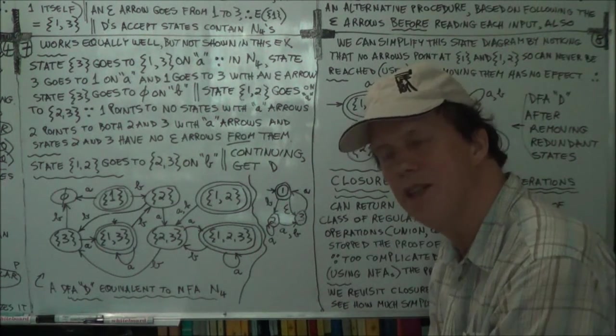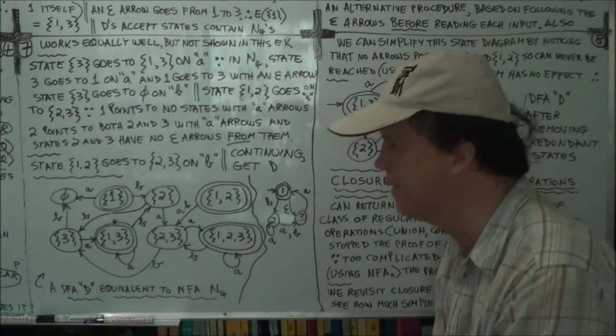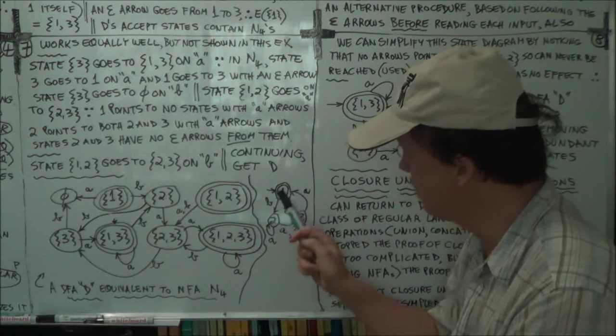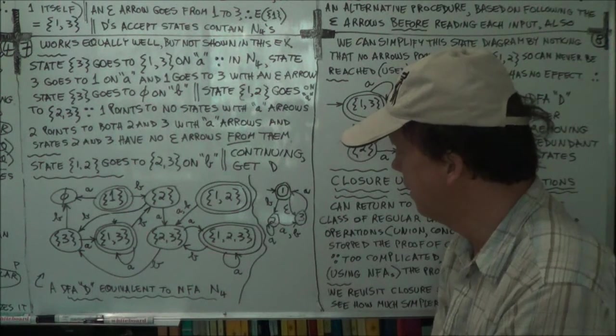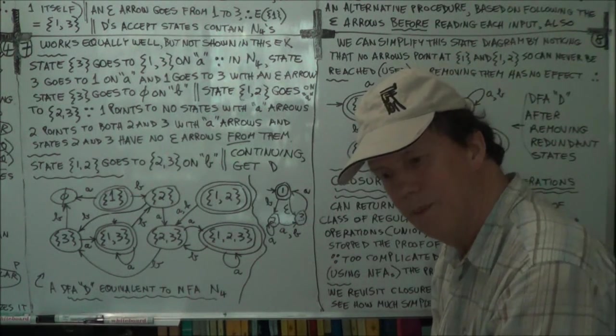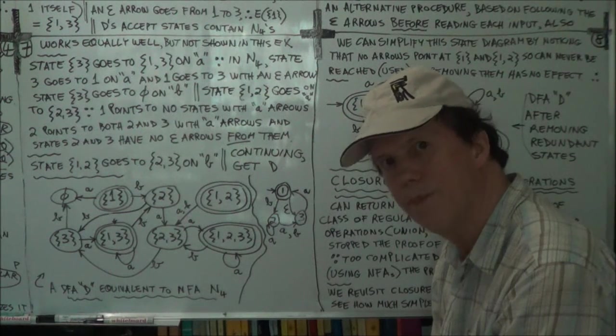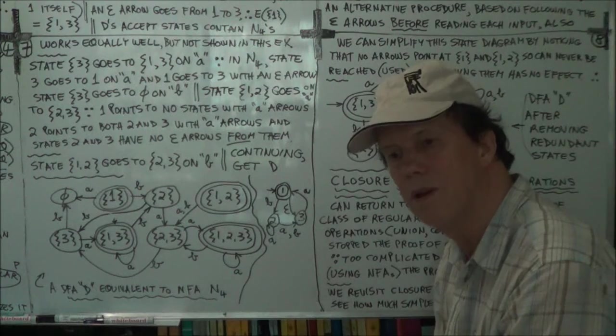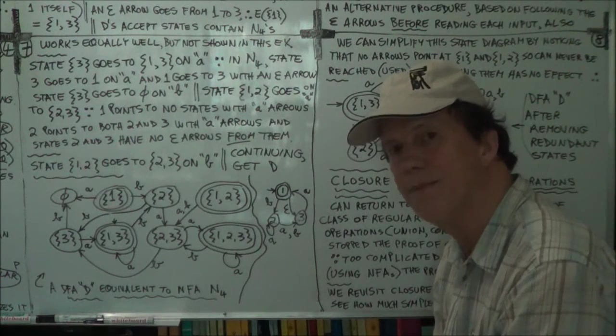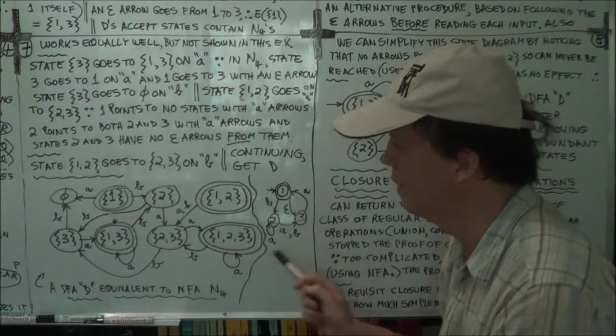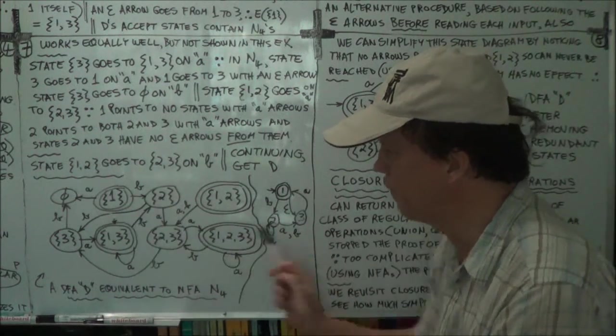That's typical of DFA equivalents of NFAs, right? They have many more states, like this thing has three states, and so the power set of a set with three elements will have two to the power three, that's eight. So this D of A will have eight states, and there they are, okay?